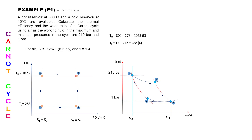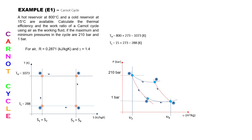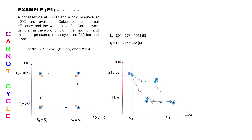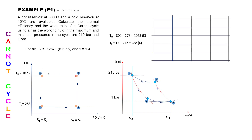The PV diagram is used when we want to find the work ratio, since the expansion processes 2-to-3 and 3-to-4 can be clearly identified on it.